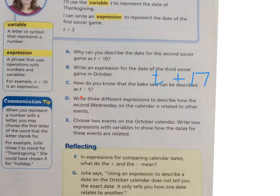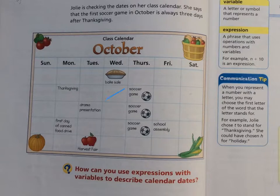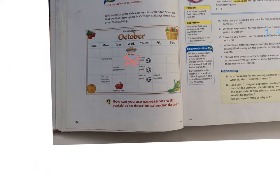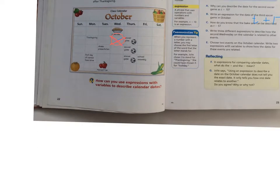Now let's move on to D: Write three different expressions to describe how the second Wednesday on the calendar is related to the other events. The second Wednesday is right here. Let's mark that — can we find three different expressions? If the Wednesday is here, let's first find a variable. We can do W as the variable. Let's pick any events — the school assembly, the drama presentation, and the harvest fair.